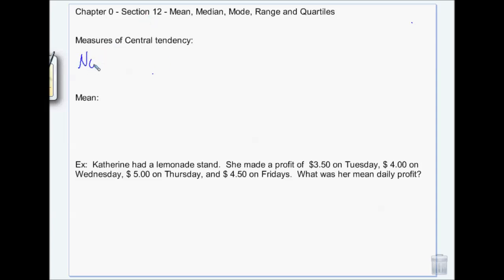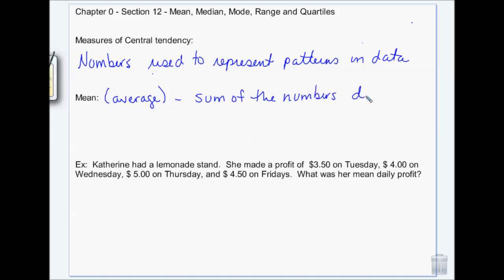Measures of central tendency are just numbers that are used to represent patterns in data. The mean is the same thing as the average. So to find the mean, you take the sum of the numbers divided by the number of numbers.